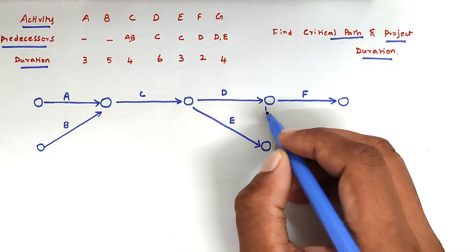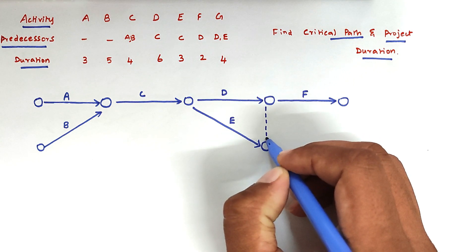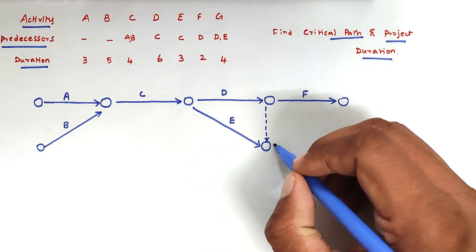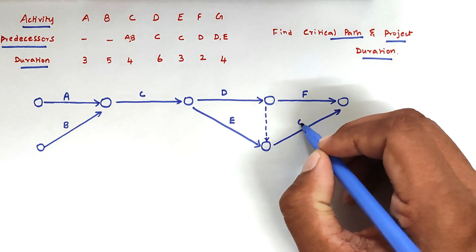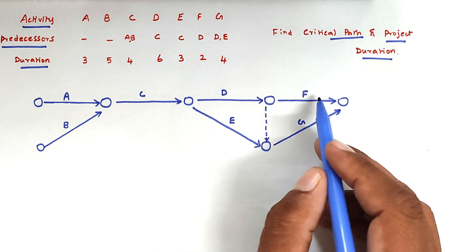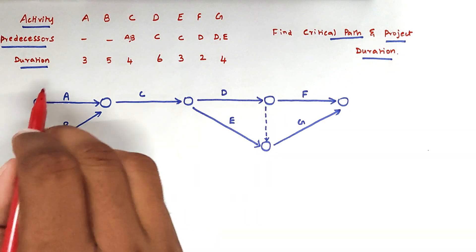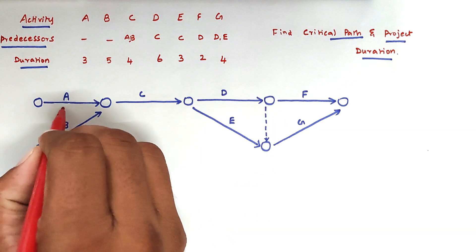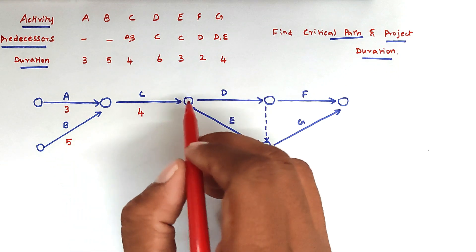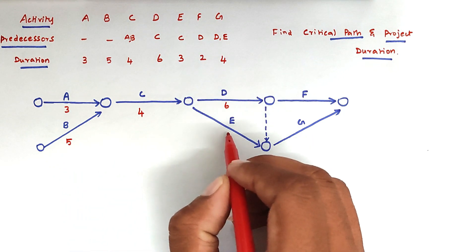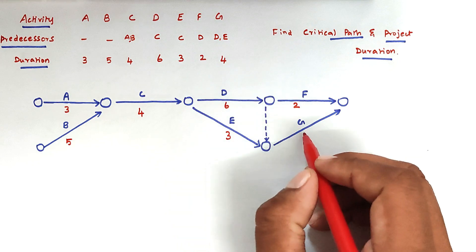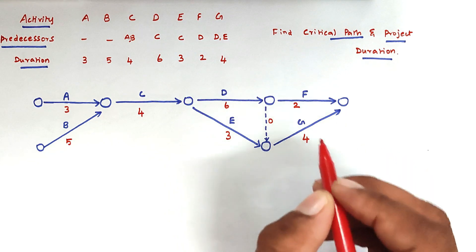Since G activity has both D and E as precedent activities, we can draw one dummy activity to connect them before drawing G. Now we can write the corresponding durations: A is 3, B is 5, C is 4, D is 6, E is 3, F is 2, and G is 4. For the dummy activity there is no duration.